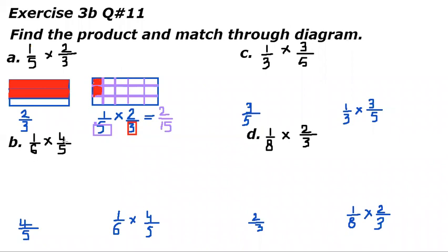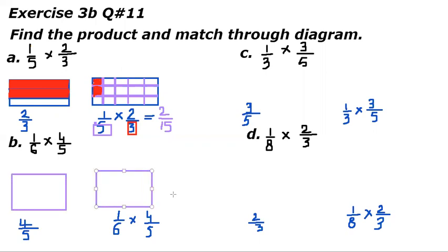First we have to draw the second fraction which is four-fifths. Both boxes should be of the same size — one box is for four-fifths and the other is for one-sixth of four-fifths. Look at the denominator, it is five. We have to cut it into five parts in a horizontal pattern. I have cut it into five parts because the denominator is five.